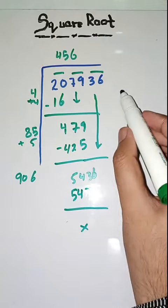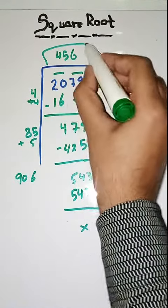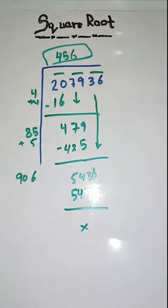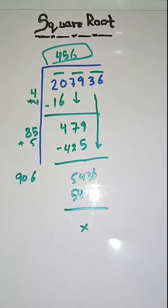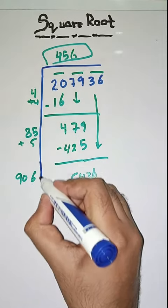So square root of 207936 is 456. Hopefully you will like this video. If you did, please like, share and subscribe my YouTube channel. If you have any question, you can ask in comment section. Thank you.